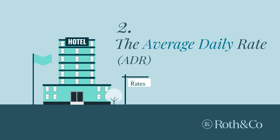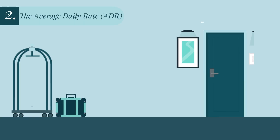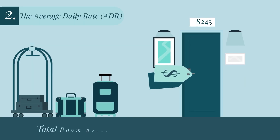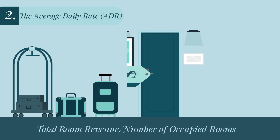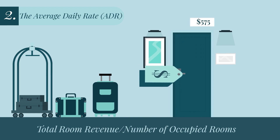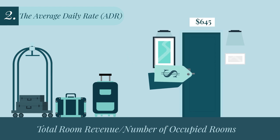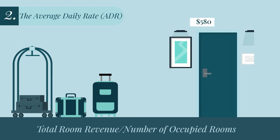Number two, the average daily rate. This is the average price guests pay for a room. The ADR can be measured on any given night or over a specific period of time, such as a month or year.